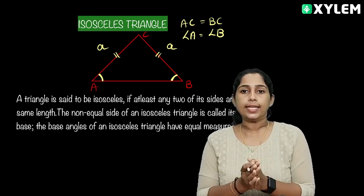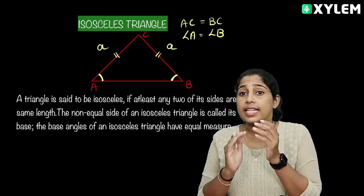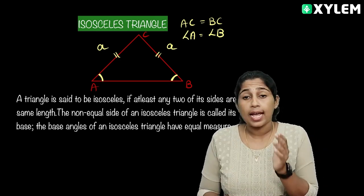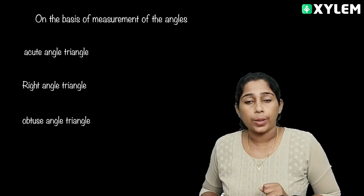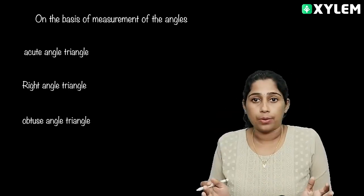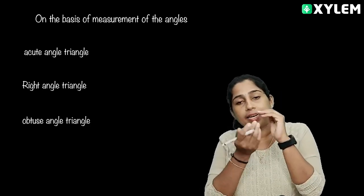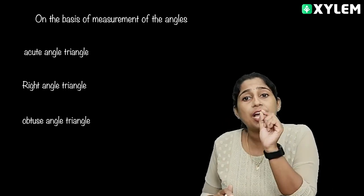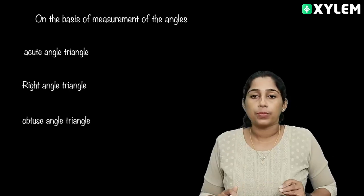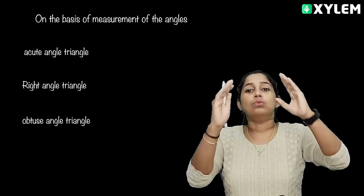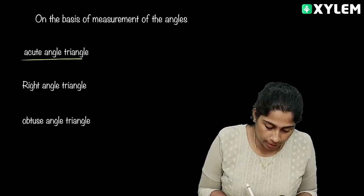Now, how do we classify triangles by their angles? We already know that less than 90 degrees is called an acute angle. In an acute angle triangle, all three angles are acute angles.